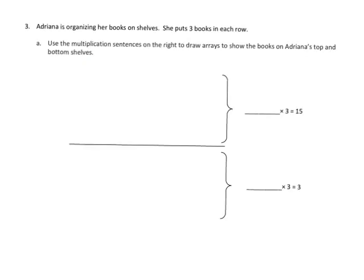Here, Adriana is organizing her books on shelves and she puts 3 books in each row. So we know that our array is going to have 3 books going across in each row. Down here it says that in this top array we have 15 books total.